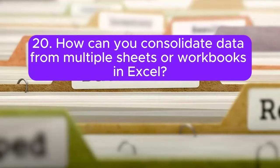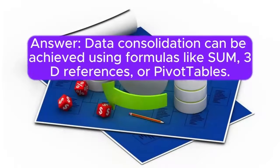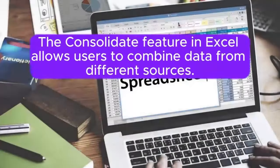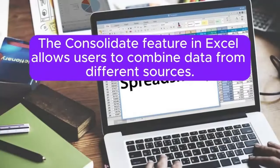Question 20: How can you consolidate data from multiple sheets or workbooks in Excel? Data consolidation can be achieved using formulas like SUM, 3D references, or PivotTables. The consolidate feature in Excel allows users to combine data from different sources.